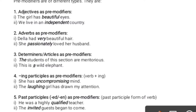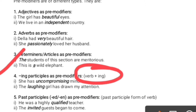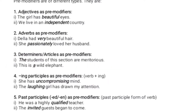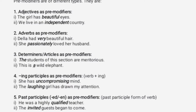Number four: the pre-modifier is present participle, which means verb plus -ing. When given a clue to use a present participle, remember it is verb+ing. For example: 'She has an uncompromising mind' — 'uncompromise' plus '-ing' gives 'uncompromising.' Another example: 'The laughing girl has drawn my attention' — 'laugh' takes '-ing,' so 'laughing' is a present participle used as a pre-modifier.